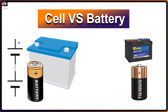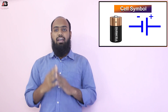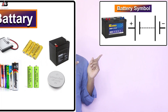A cell is a single unit that converts chemical energy into electrical energy. A battery is a collection of cells which are connected either in series or in parallel. Cells are either dry, wet, or fluid type depending on the electrolyte used. The battery is either rechargeable or non-rechargeable. Here is the symbol of cells and here is the symbol of batteries.